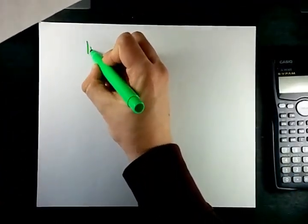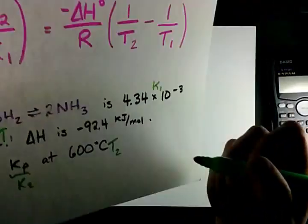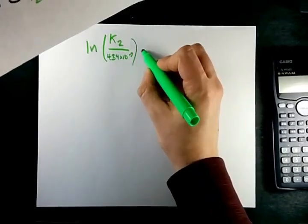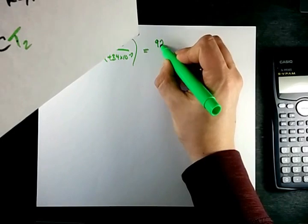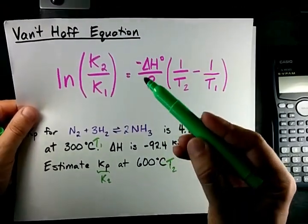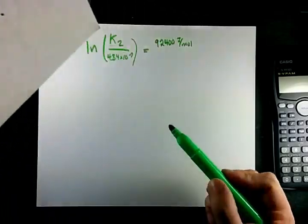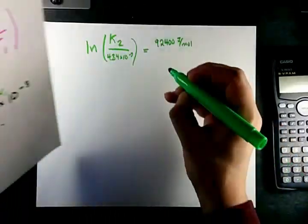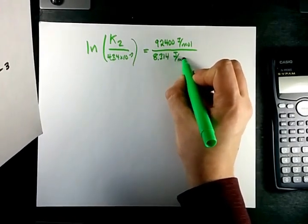We've got the natural logarithm, which I call the ln, of K2 over K1, which was 4.34 times 10 to the negative 3, equals negative delta H, so for us that's 92,400 joules per mole. It's positive because the negative cancels out that negative, and I'm converting it to joules per mole. That's multiplying it by 1,000 because I know that the R, the gas constant that I'm going to use, is 8.314 joules per mole Kelvin.